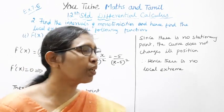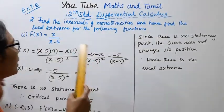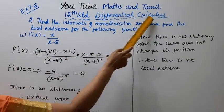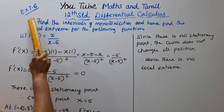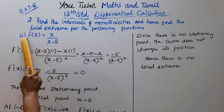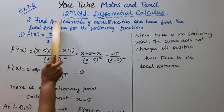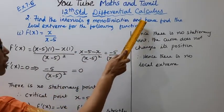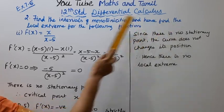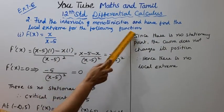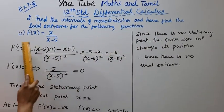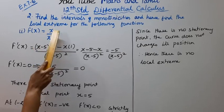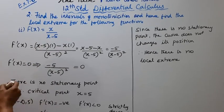Hello students, welcome to Max and Tamil channel. This is 12th standard max differential calculus, exercise 7.6, second submission. Find the intervals of monotonicity and hence find the local extrema for the following function: f of x equal to x divided by x minus 5.